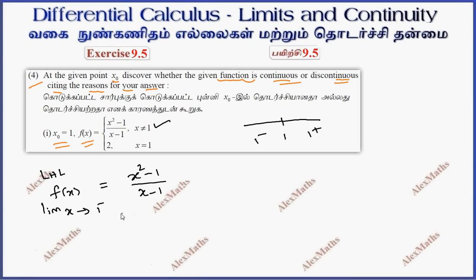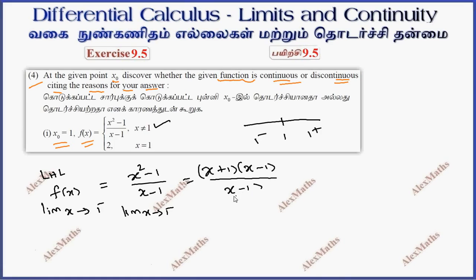Now, limit extending to 1 minus. We factorize the numerator as x plus 1 into x minus 1, divided by x minus 1. So x minus 1 cancels. Taking the limit as x approaches 1 minus, we substitute 1 plus 1, which gives a total value of 2.